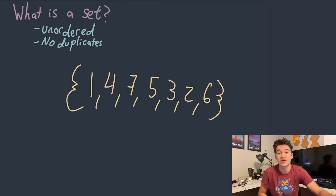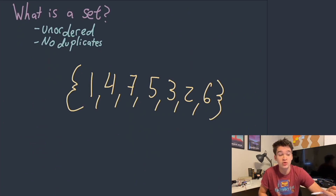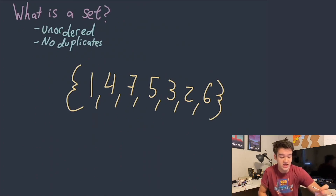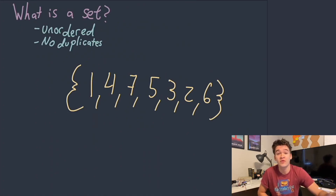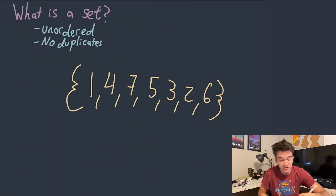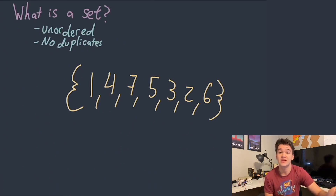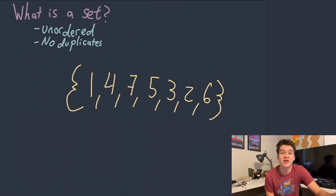A set is an unordered collection of objects with no duplicates. Normally it will just be like one data set or something like that, and you represent it as just being in between two curly braces if you're writing out an entire set. These have two very specific properties: they don't have any implicit sense of ordering — so moving the four to the end of the list would mean the exact same set — and also there are no duplicates, because duplicates wouldn't actually add any information to the definition of a set.